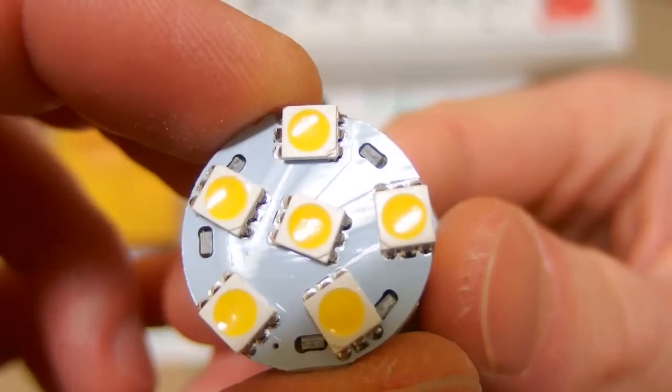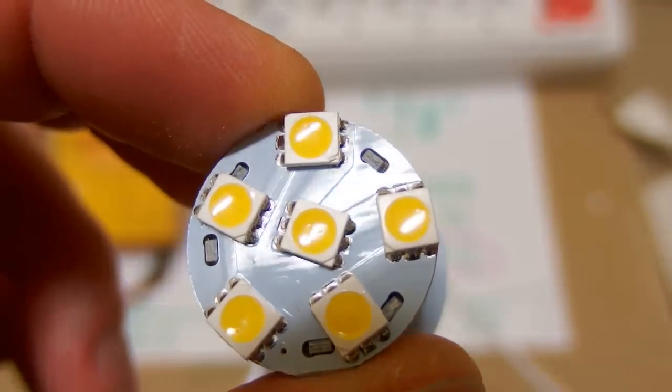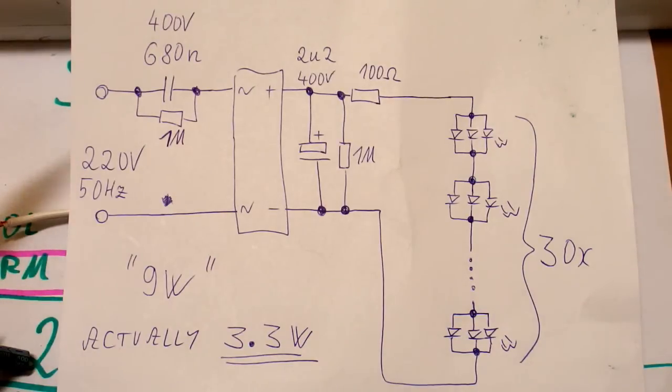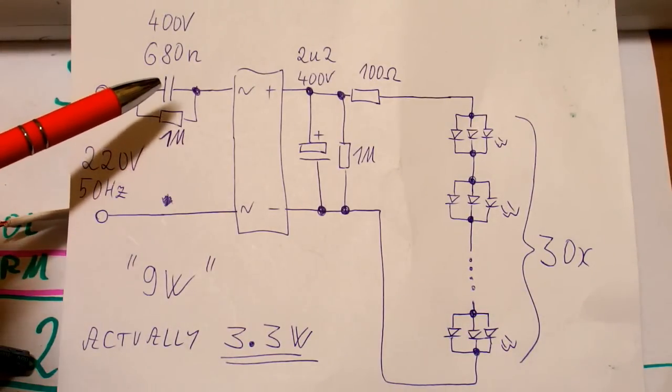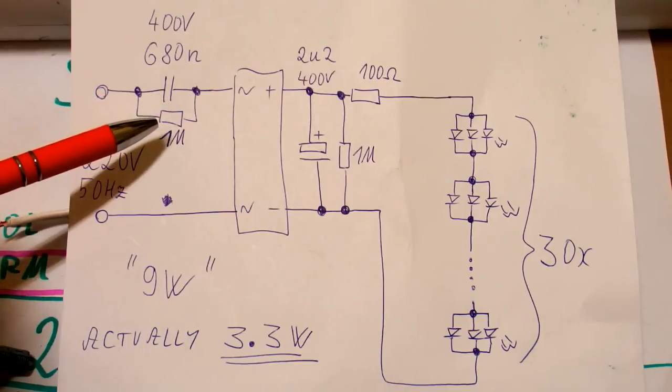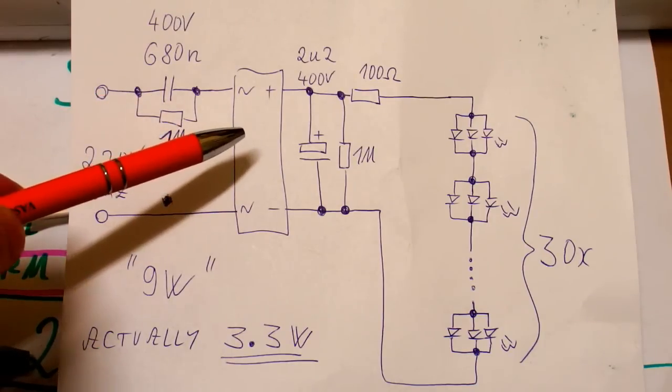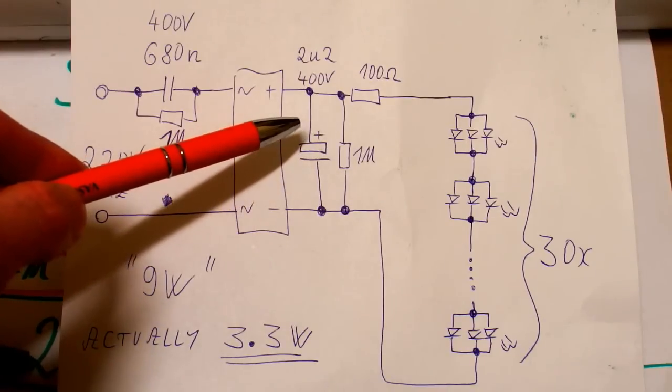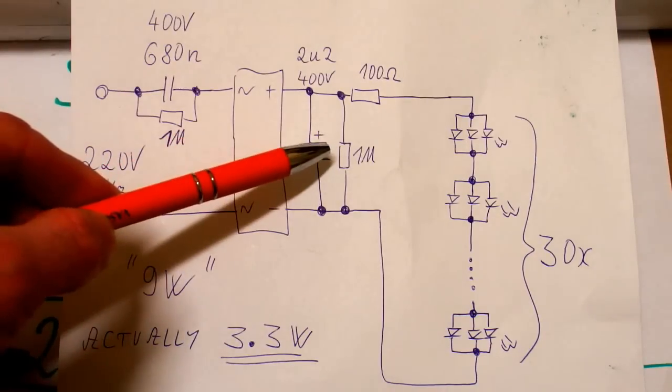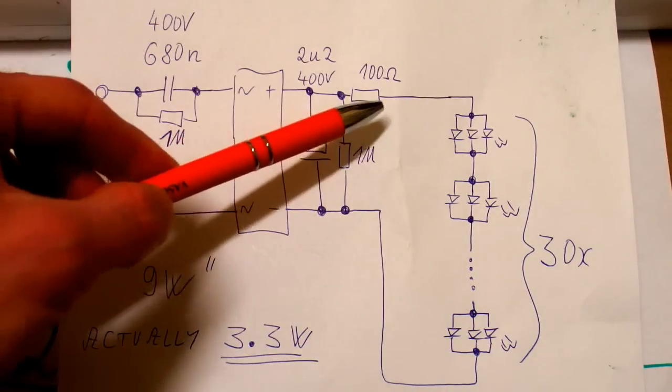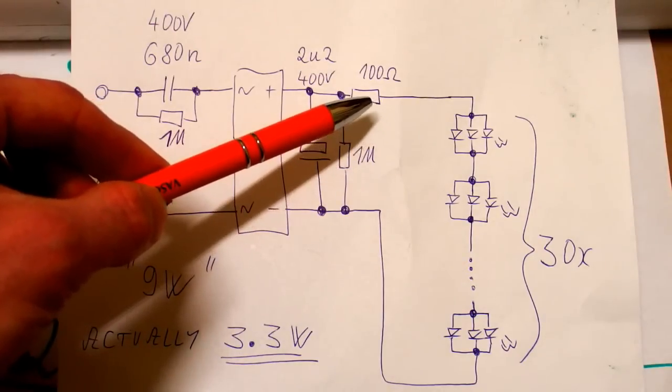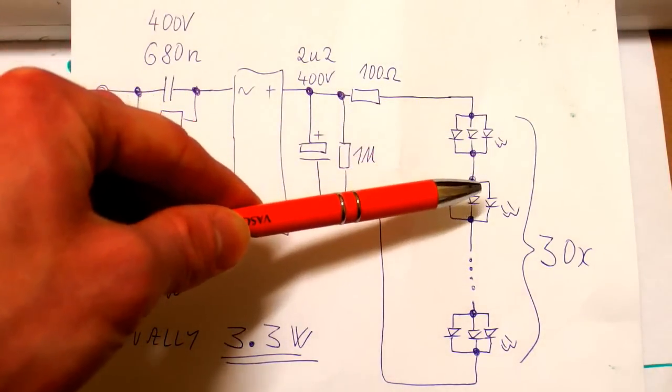But it looks like the chips are in parallel in this case. I have made a schematic of it and it's really simple. The mains comes in, it goes through the capacitive dropper with the capacitor and the resistor. Then it goes through the bridge rectifier. Then it goes to the filter capacitor and its discharging resistor. Then it goes through the inrush resistor and finally through those LEDs.